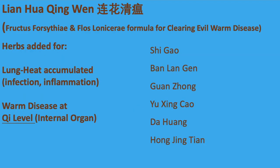A large group of herbs in Lian Hua Qing Wan to clear lung heat accumulation, which is warm disease at Qi level, including Shi Gao, Banan Gan, Guan Zhong, Yu Xing Cao, Da Huang, and Hong Jing Tian.